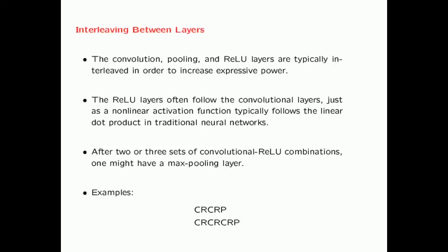Typically, there is an interleaving between the layers. The convolutional, pooling, and ReLU layers are typically interleaved to increase expressive power. ReLU often follows convolutional layers, similar to traditional neural networks where the activation function immediately follows matrix multiplication. After two or three sets of convolutional-ReLU combinations, one might add a max pooling layer — patterns like CR or CRP (C for convolution, R for ReLU, P for pooling). In recent years, max pooling is often substituted with strided convolution.